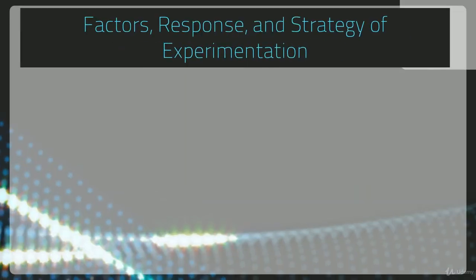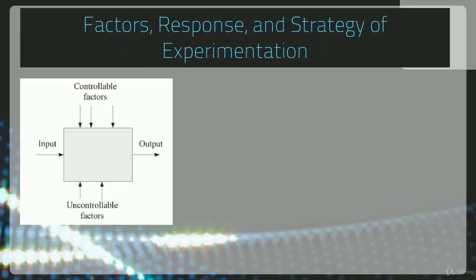The first factors, response, and strategy of experimentation. So when you are performing an experiment, you are going to have controllable factors and uncontrollable factors. The parameters are going to be factors that you can control. The type of learning algorithm is a factor that you can control. There are some uncontrollable factors like the random initialization of the weights. Maybe you get a better option one of the times when you initialize it. But ultimately, all of those factors are going to combine to give you a specific output from your input.